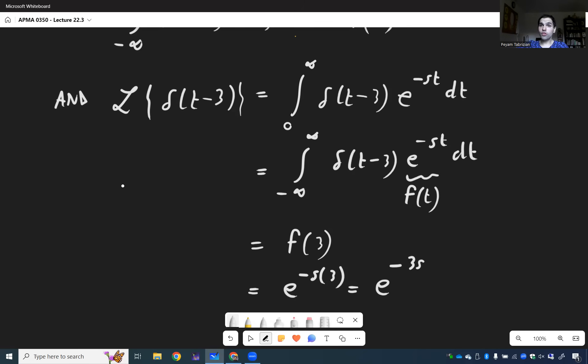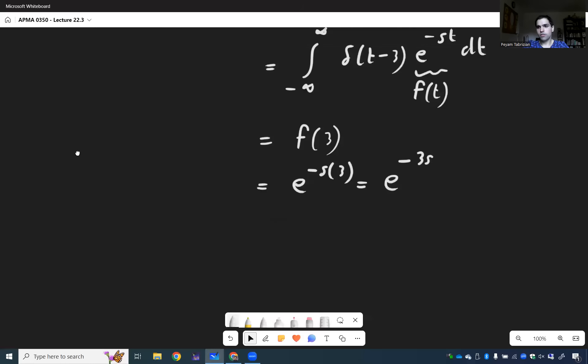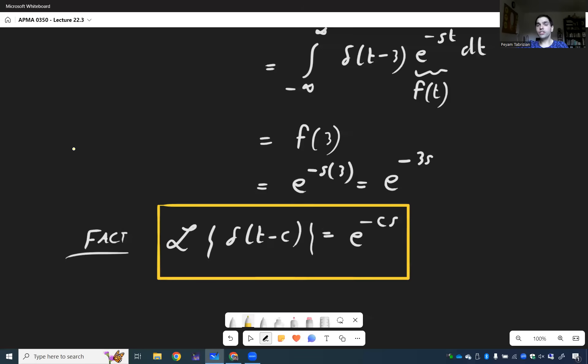So the Laplace transform of Dirac at another point is e^(-c) times that point times s. So fact: the Laplace transform of Dirac at c is e^(-cs). So here you get pure exponential functions, not like divided by s as before.